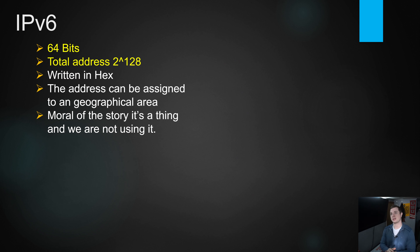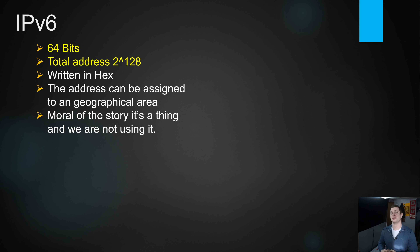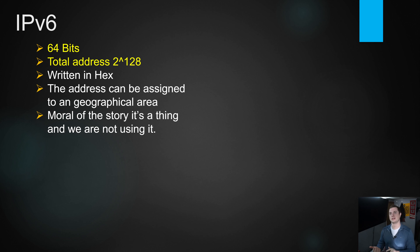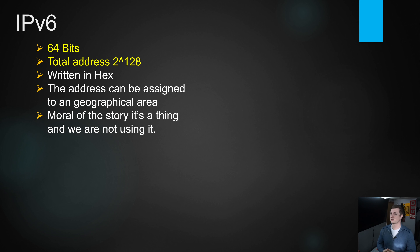IPv6 uses 64-bit addressing instead of 32-bit, written in hexadecimal, and can be assigned to geographical areas. This is helpful from a security standpoint because IP addresses can tell you where network traffic came from. For the most part we're still going to use IPv4, but IPv6 is out there and you'll eventually need to know it.